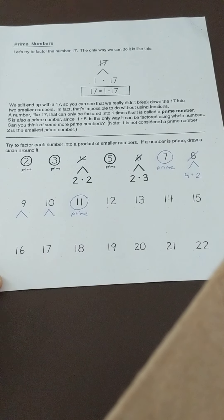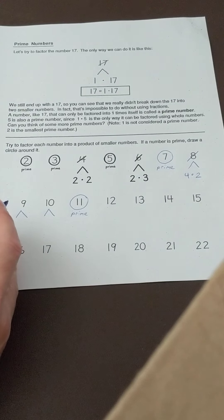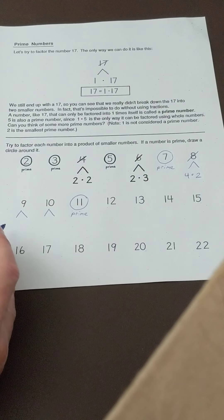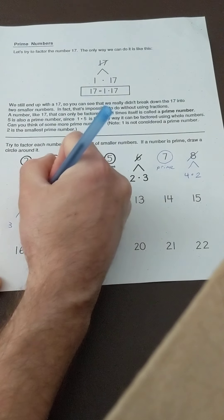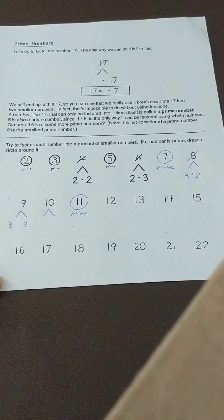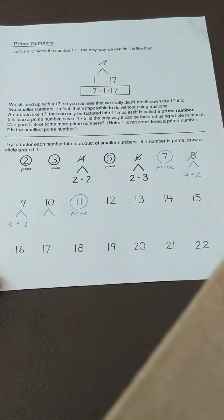All right, so I want you to find the rest of the prime numbers and make factor trees. These ones, if you completed them, would be three times three and five times two.